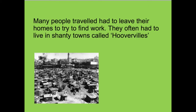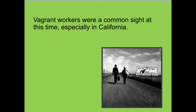They often lived in shanty towns called Hoovervilles, and this is an example of a Hooverville here. They were houses made of cardboard, wood, and metal — just waste materials — and you might have to keep your whole family in one of these tiny little huts, just because you'd moved away from your home to try and find work. Make sure you write down the word 'Hooverville' — it's a really important word. This also meant that there were vagrant workers: people who were homeless and would just move from place to place to try and get a job. They were a really common sight at the time, especially in California, and there were men like George and Lennie — like these two men here — who would just move from place to place trying to find any work that they could.